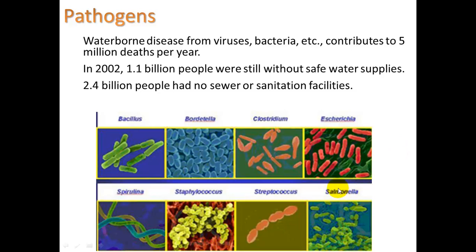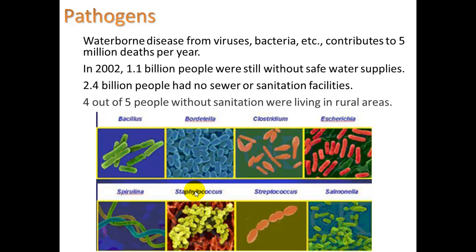Some of the nastier ones that we may have heard about are salmonella, E. coli poisonings, streptococcus — we see strep show up in strep throat. Staphylococcus — sometimes people get staph infections that are really hard to treat with antibiotics. Some of them are even flesh-eating. And 4 out of 5 people without sanitation were living in rural areas.